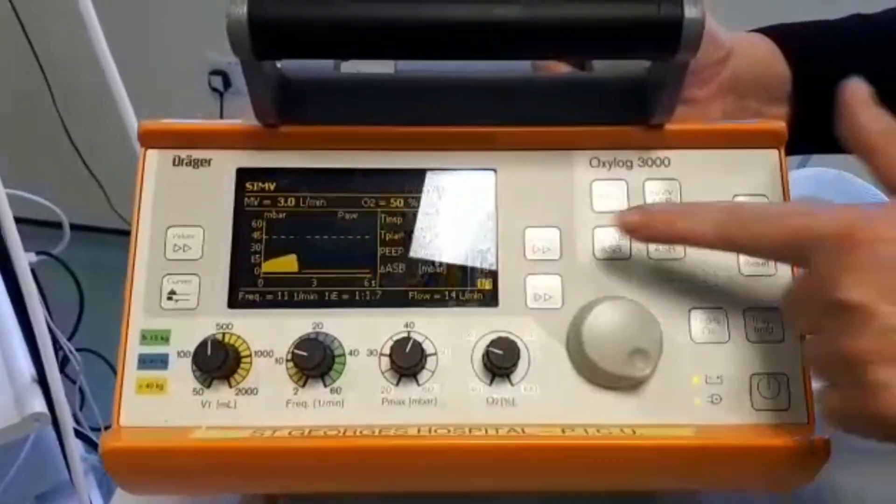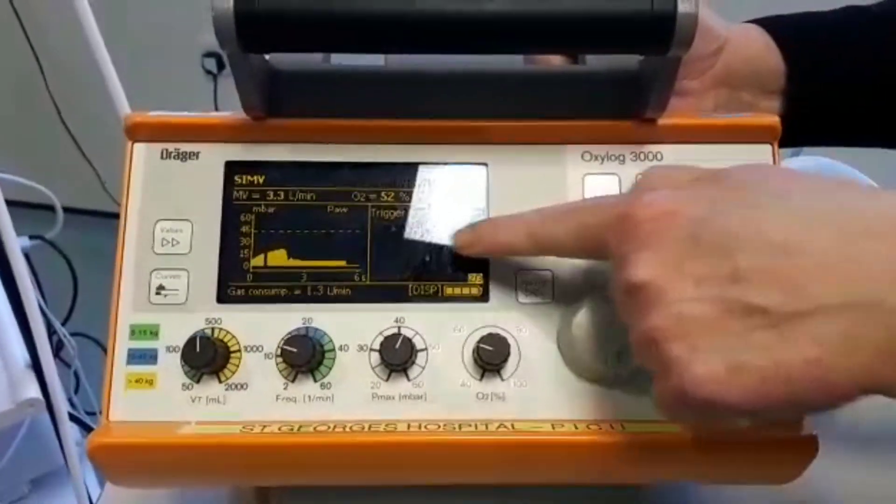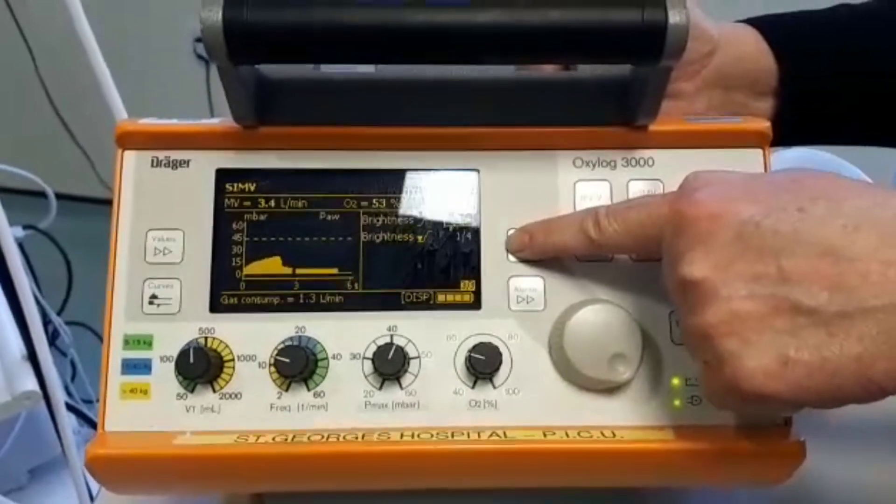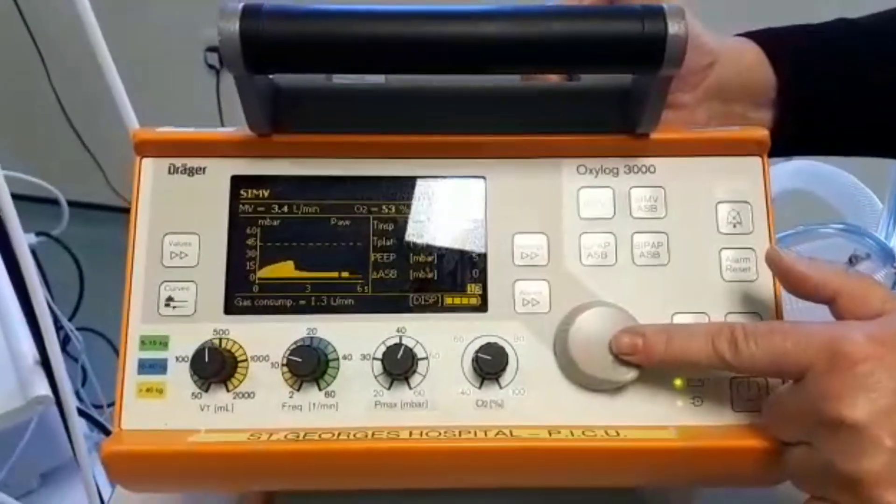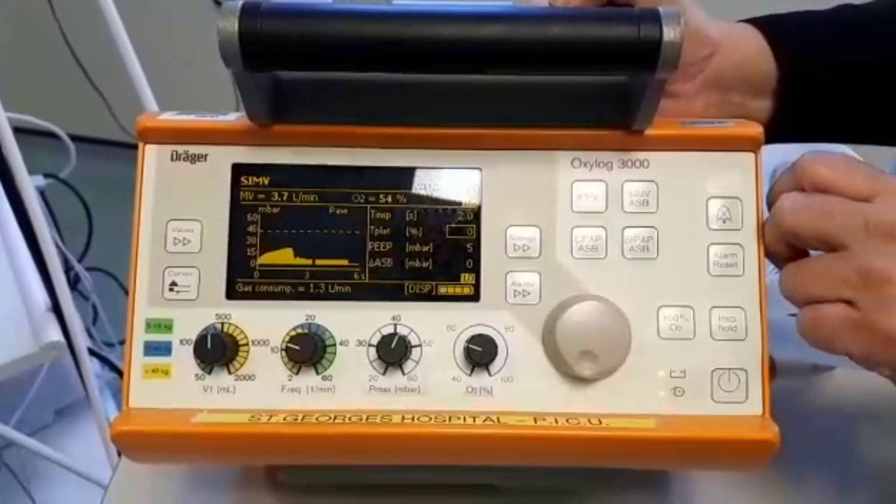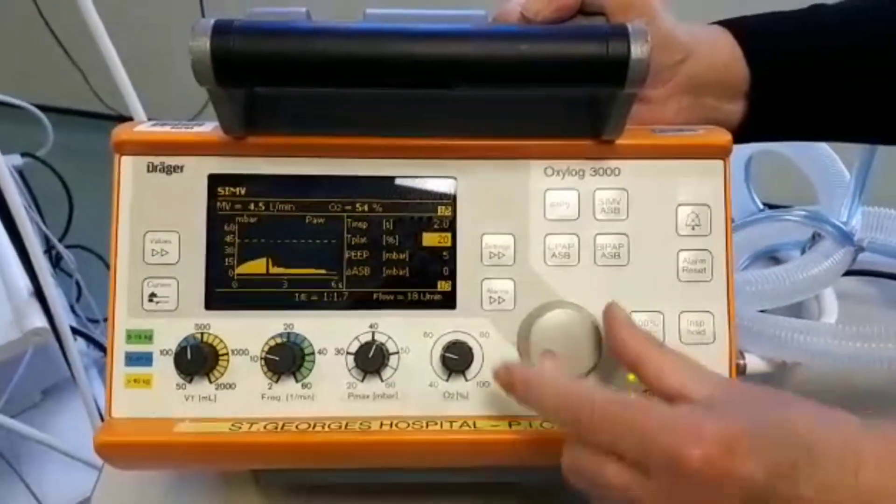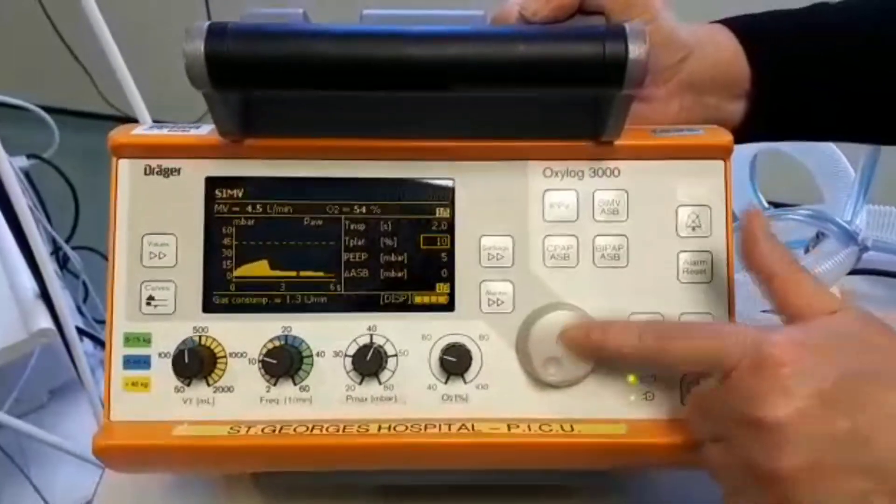For all other settings, we need to use the settings button which we press to scroll through different pages. And then we use the control knob to highlight the setting you wish to change. Confirm by pressing to enter, turn to adjust, and confirm by pressing again.